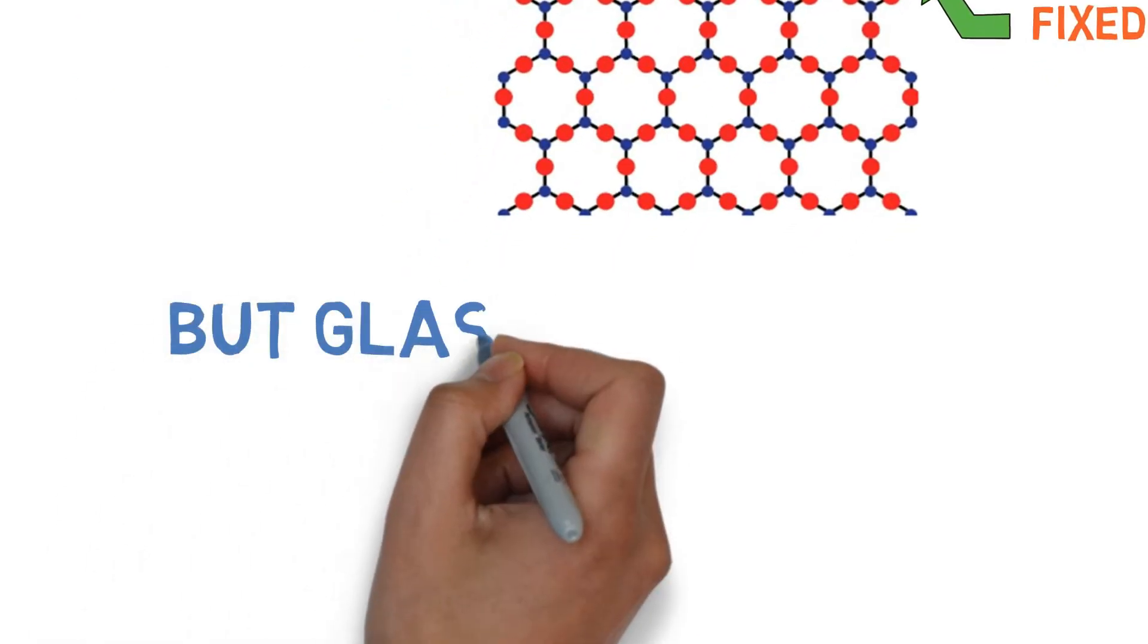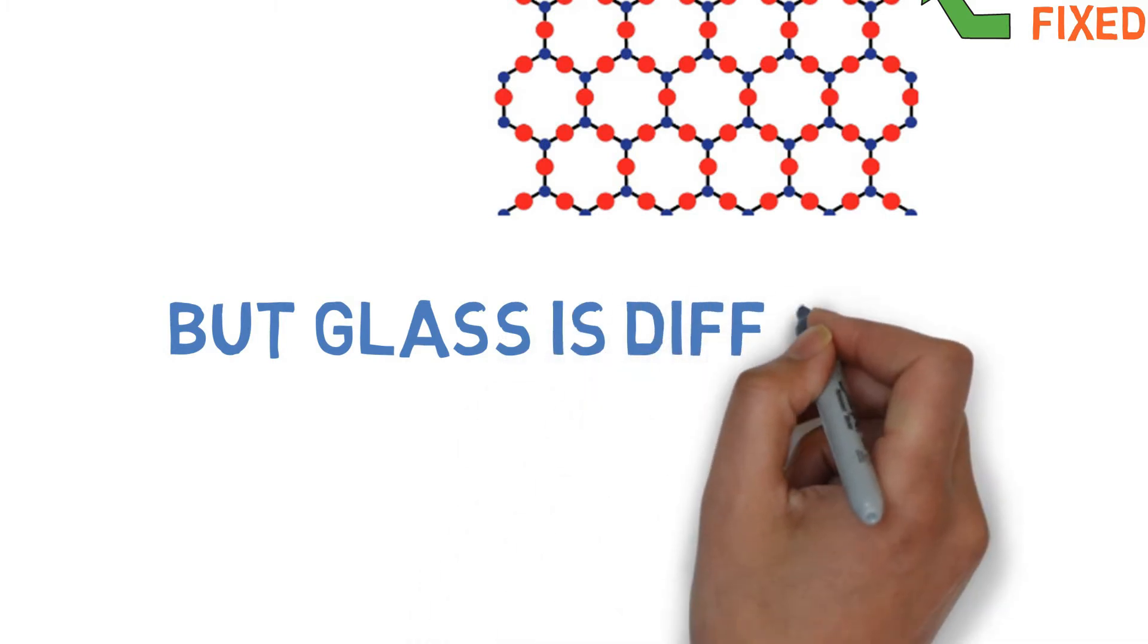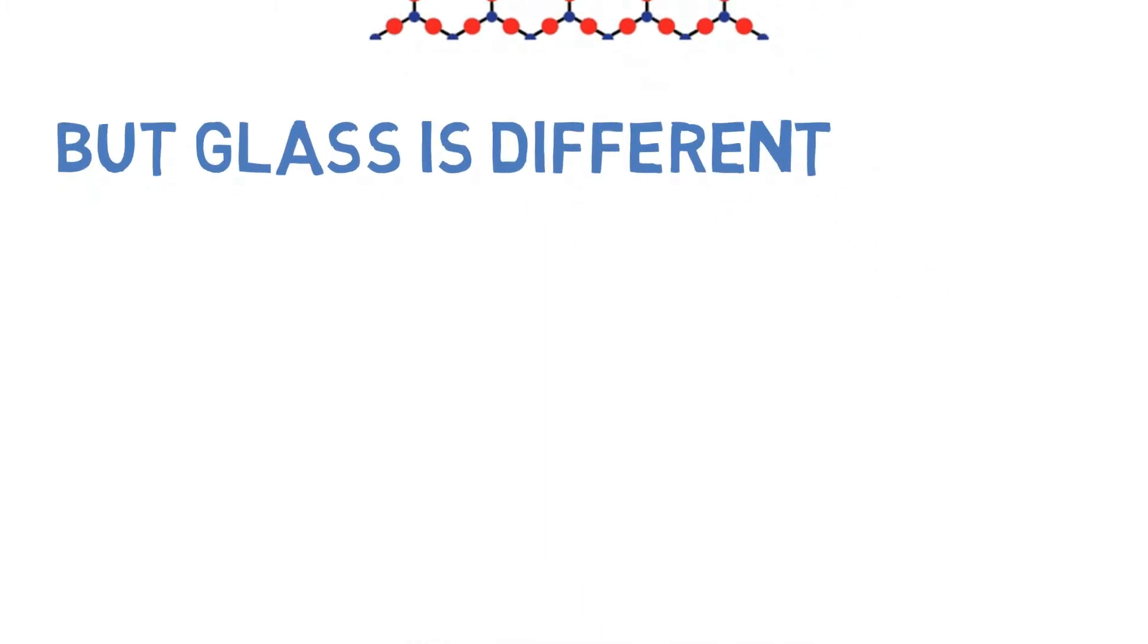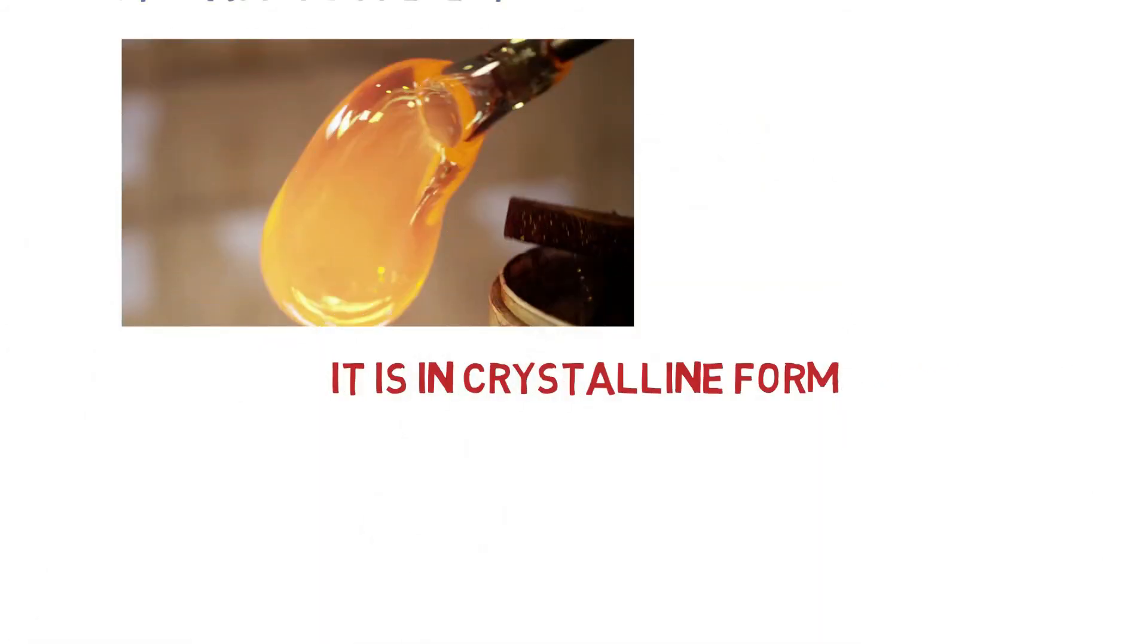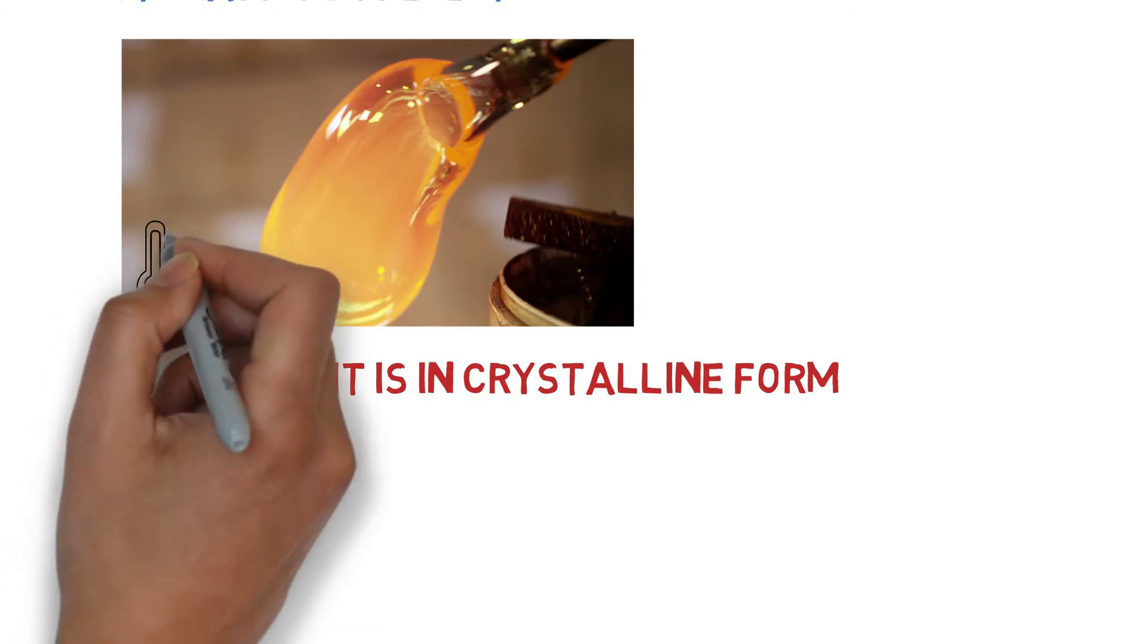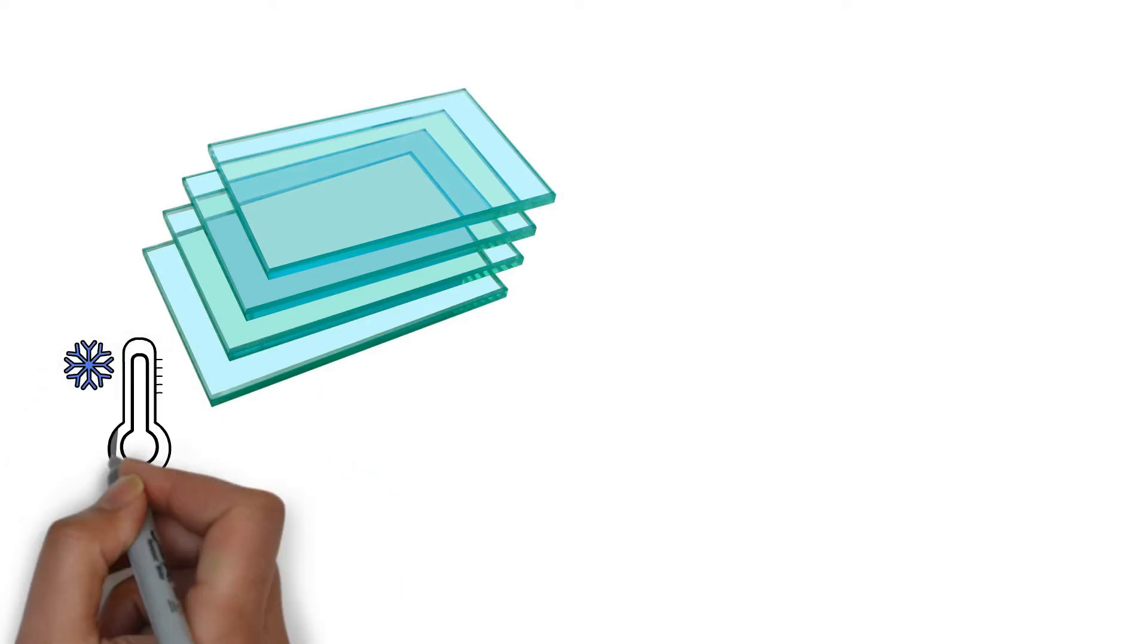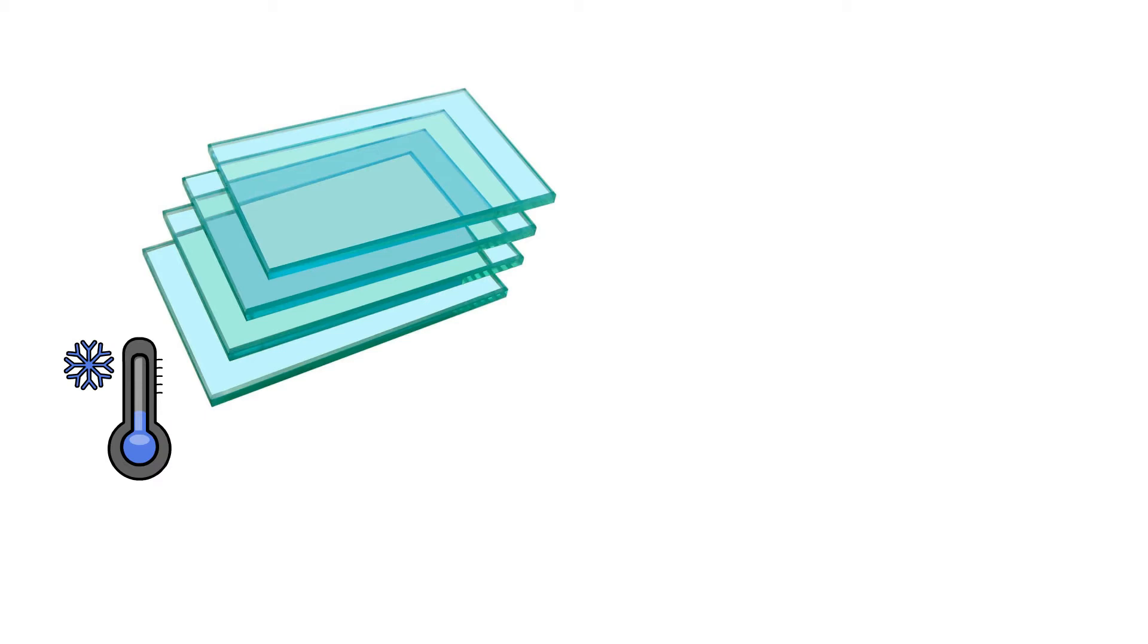But glass is different. When we take the raw SiO2 or silicon dioxide, it is a form of a crystalline solid called quartz. But when we heat up quartz at a very high temperature, it takes up a molten state, and this molten state when cooled down, the arrangement of atoms is different.